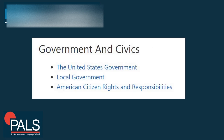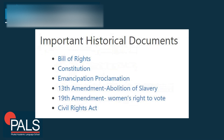The government and civics portion is all about the United States government, local government, and American citizen rights and responsibilities — things to make you a good part of the electorate. Important historical documents you should be familiar with include the Bill of Rights, the Constitution, the Emancipation Proclamation, the 13th Amendment which is about the abolition of slavery, the 19th Amendment pertaining to women's right to vote, and the Civil Rights Act.